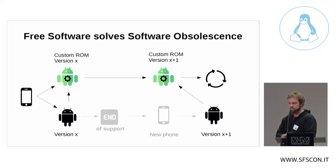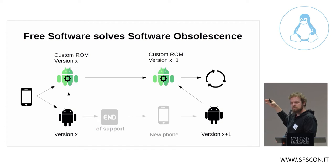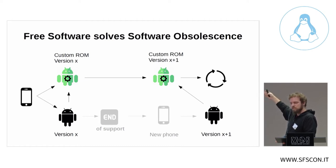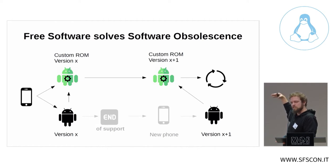Fortunately, free software can help us with this. These examples are from the Android system — it's very obvious there, but the problem and the solution apply to other environments too. If I buy a device with version X and there's a free software alternative for version X, and also for version X+1, then no manufacturer can tell me the support has ended. I can just install the free software version, upgrade to the next version, and keep using my device — saving a lot of natural resources.